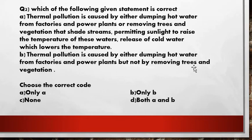The second question asks: which of the following statements is correct? Statement A says thermal pollution is caused by either dumping hot water from factories and power plants, or removing trees and vegetation that shade streams, permitting sunlight to raise the temperature of water, including release of cold water which lowers temperature. Statement B says thermal pollution is caused by dumping hot water from factories and power plants but not by removing trees and vegetation.